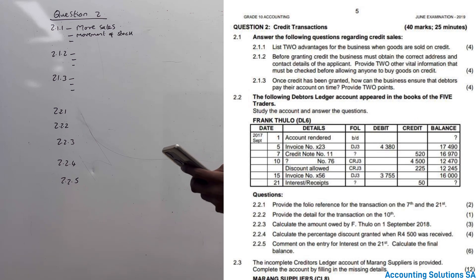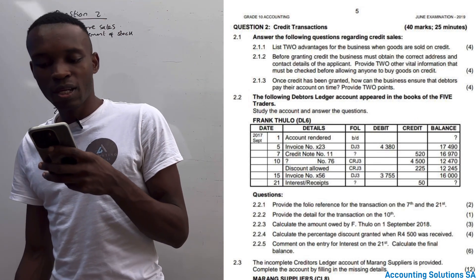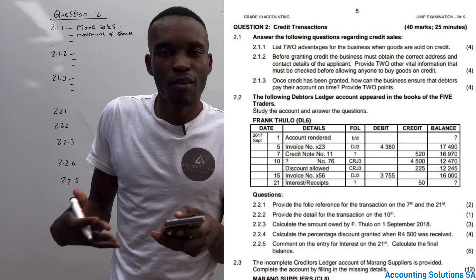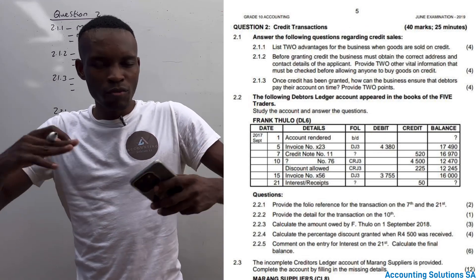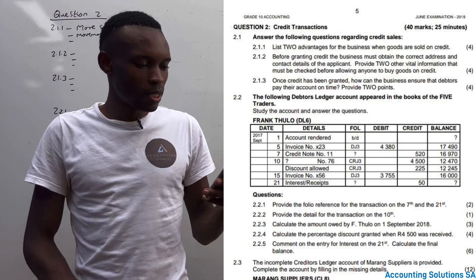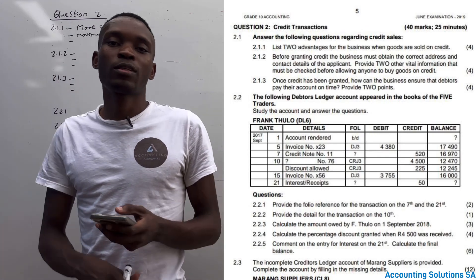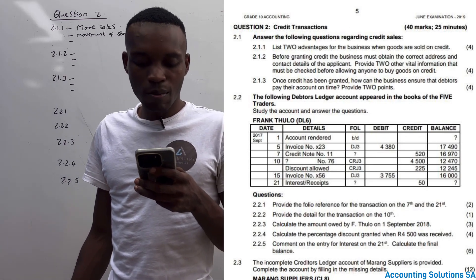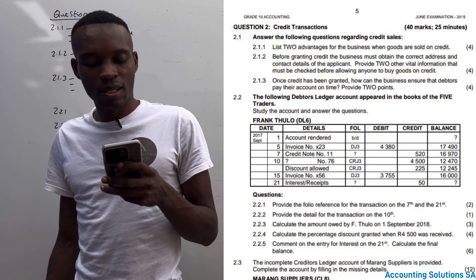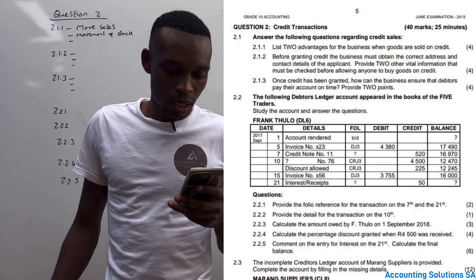Now let's go to the next one — Question 2.1.2: Provide two vital pieces of information to be checked before allowing credit. Before granting credit, the business must obtain the correct address and contact details of the applicant. We can't just give a person credit; we have to collect where this person comes from, where they stay, and their contact details so we can reach them.